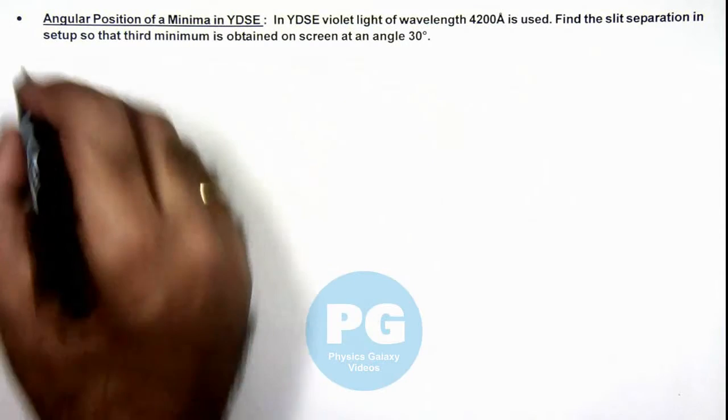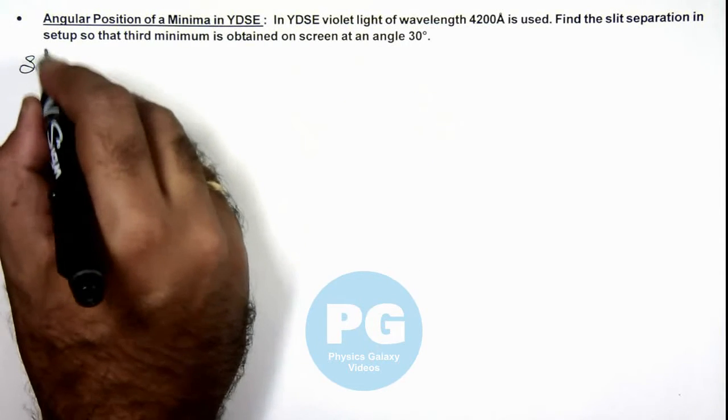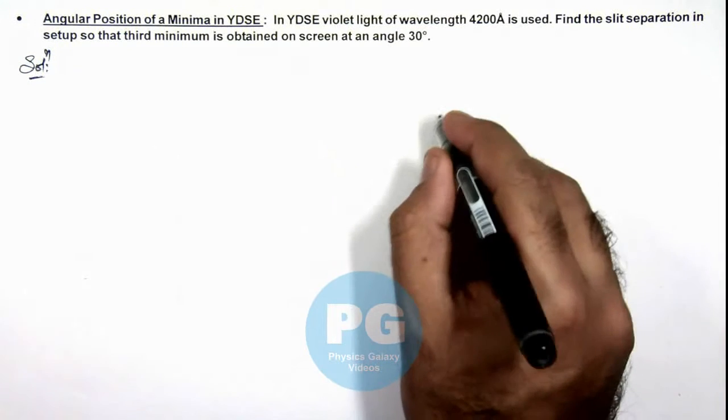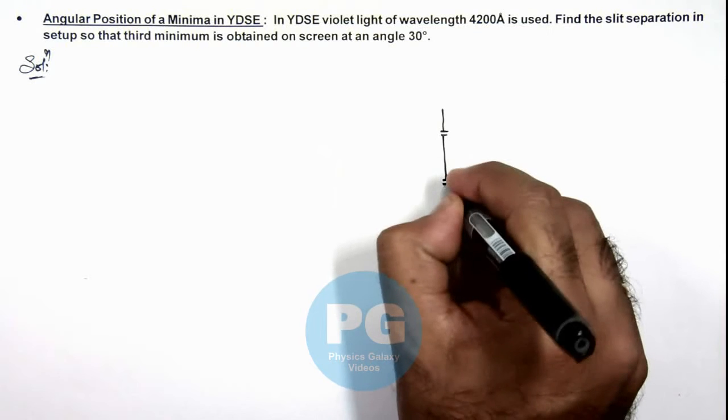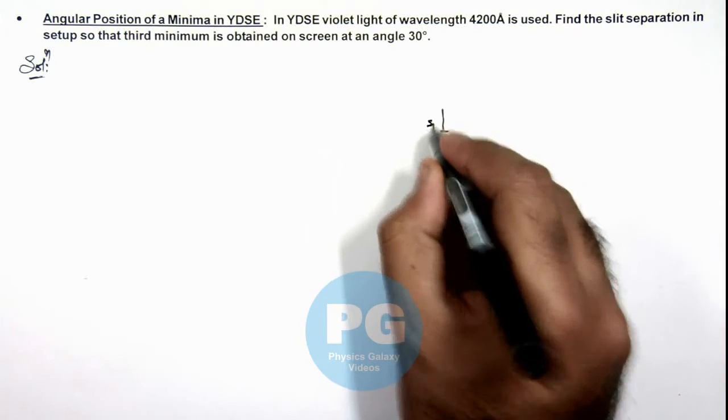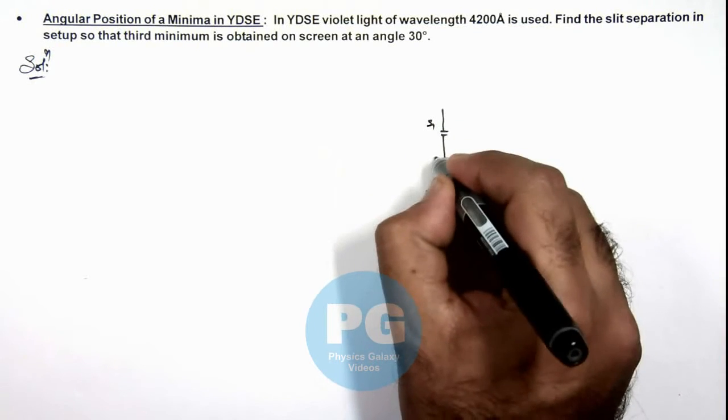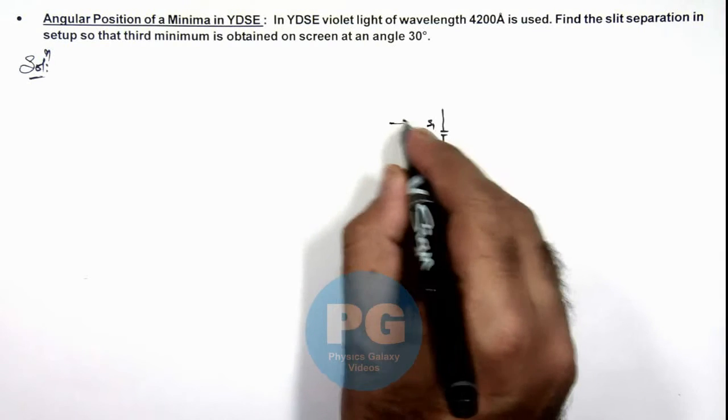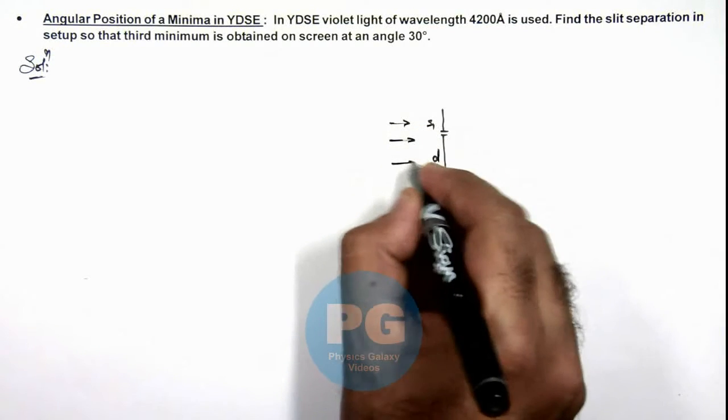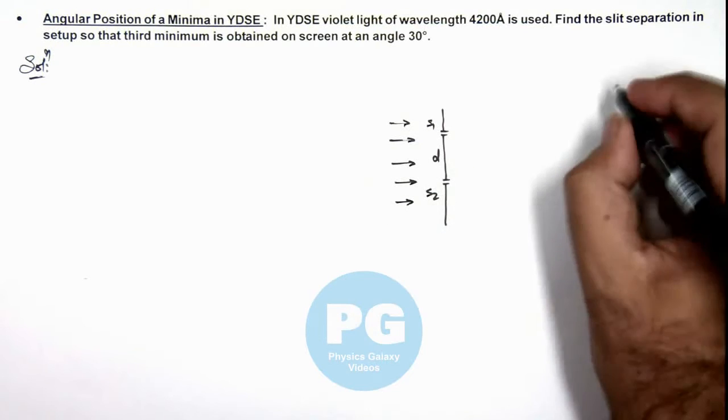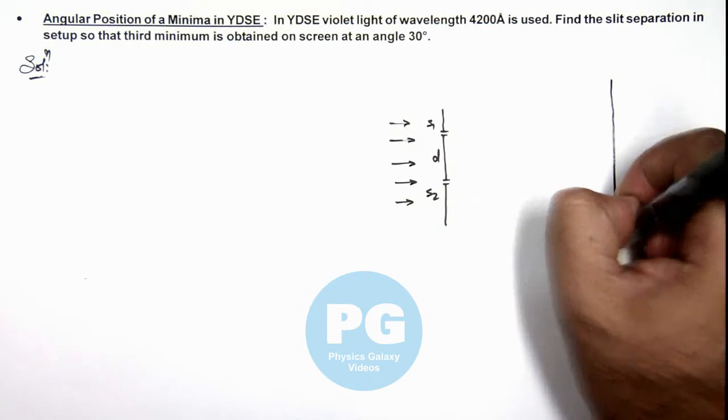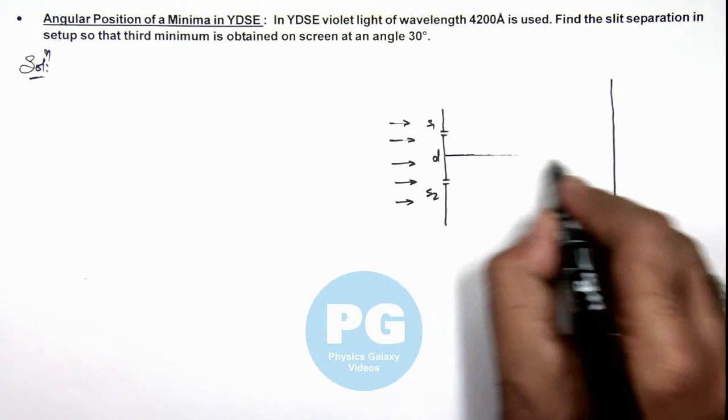Now in this situation, if we draw the YDSE setup, the situation is like this where we are having two slits S1 and S2 separated by distance d, on which a coherent beam of light falls and these two behave as two coherent sources for the interference to be produced on screen.